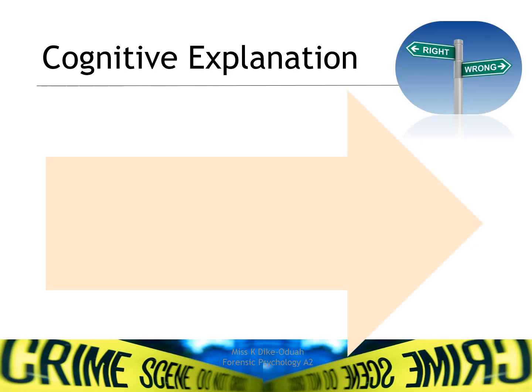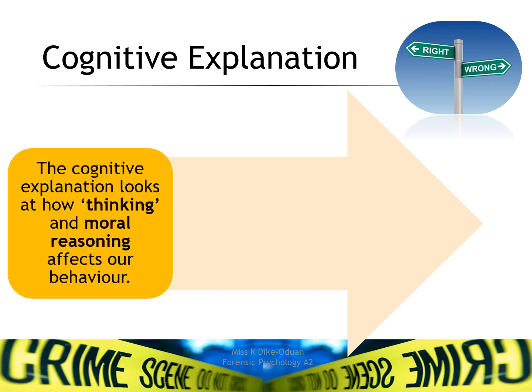Cognitive Explanations in psychology suggest that our behaviours are determined by the way that we think. The Cognitive Explanation looks at how thinking and moral reasoning affects our behaviour. In Forensic Psychology, it looks at how thinking and moral reasoning can determine criminal behaviour.